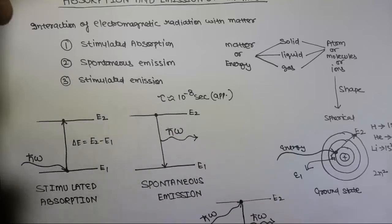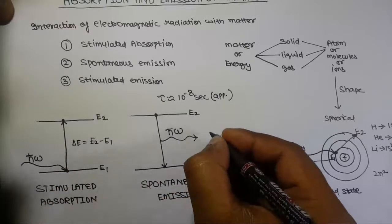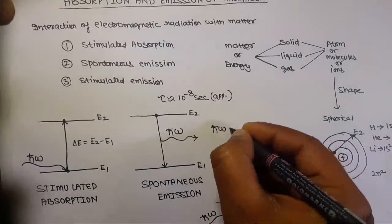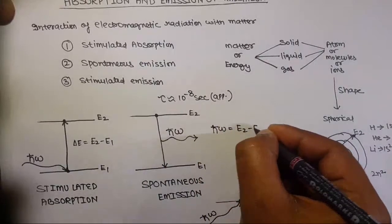And however, the energy saved by the excited state, I can do it like this: H bar omega equal to E2 minus E1.